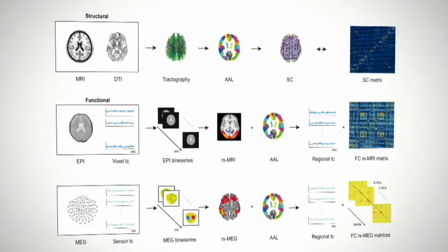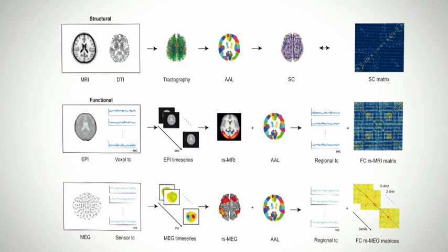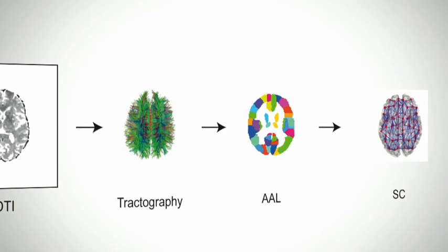The brain can be parcellated into regions and the connectivity between these can be quantified. MRI and DTI can be combined with tractography and parcellation to create structural connectivity, SC, which can be represented with the SC matrix.